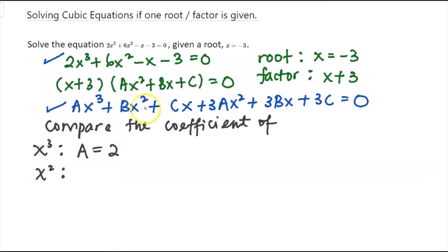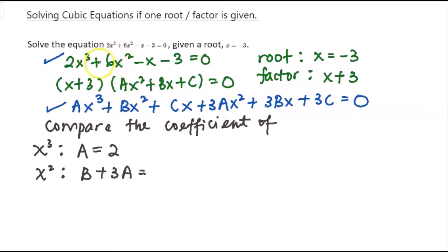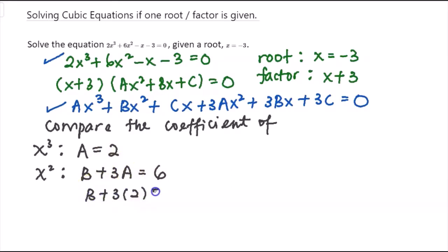Next, I will compare the coefficient of x squared. From the expanded equation, the x squared terms give b plus 3a. Comparing with the original equation, that coefficient is 6. Substituting a equals 2 gives b plus 6 equals 6, so b equals 0.